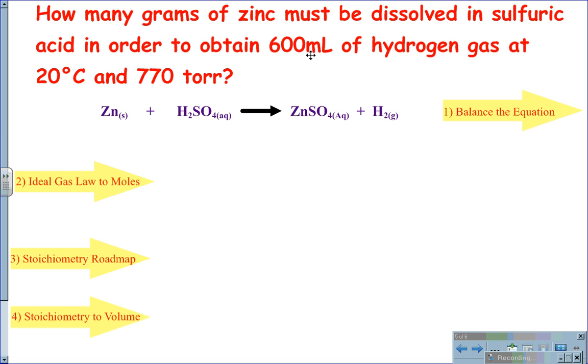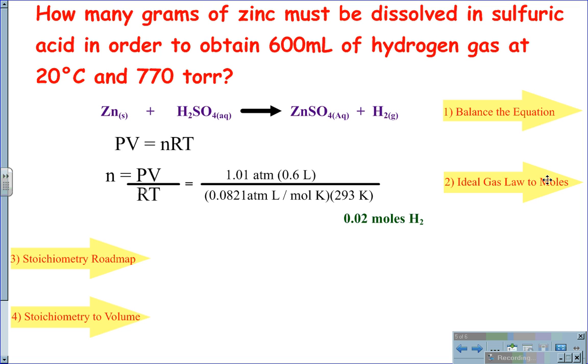For this problem, since we are already given the volume and we are looking for the grams, we must first take the volume along with the temperature and pressure values and place them in the ideal gas law to find out how many moles of the gas we are working with. In this case, PV equals nRT solves out to N equals PV over RT in order to solve for moles.